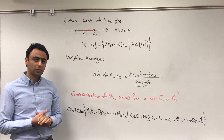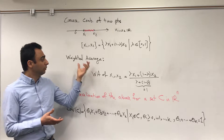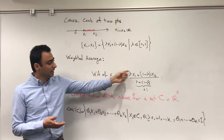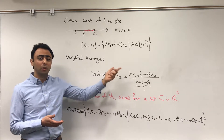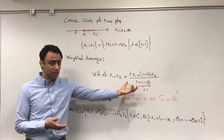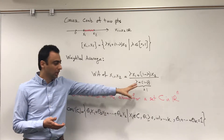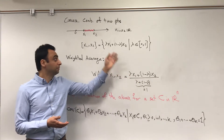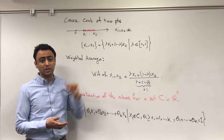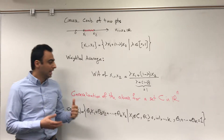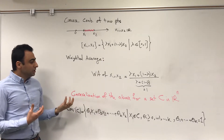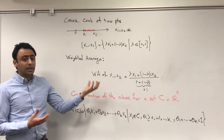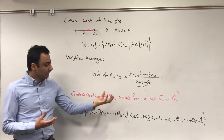Another way of thinking about the convex hull of two points is as a weighted average. The weighted average of these two points using weights lambda and one minus lambda gives this ratio, but we don't write the denominator because the summation of weights is always equal to one.